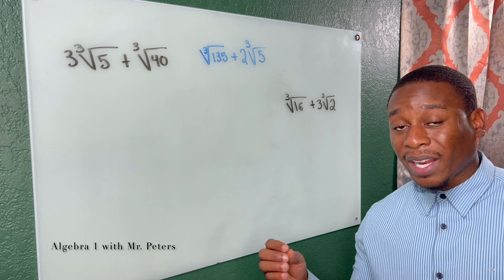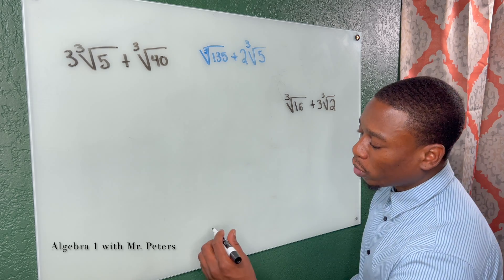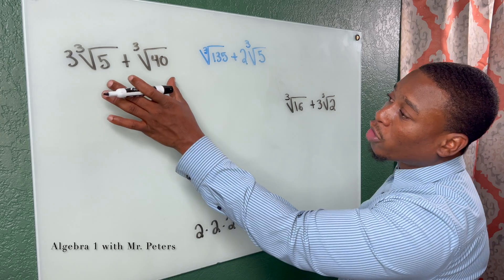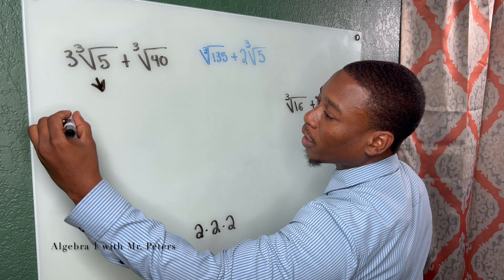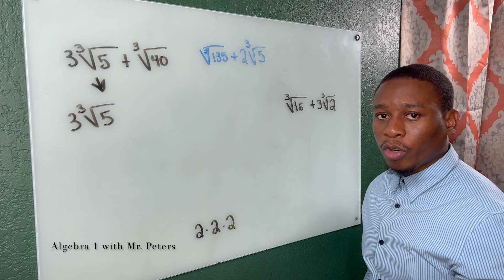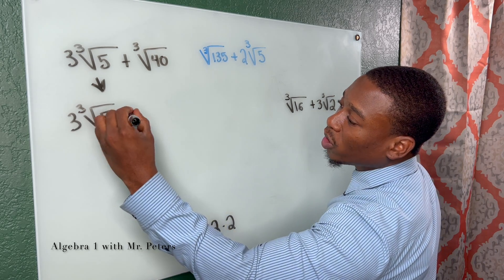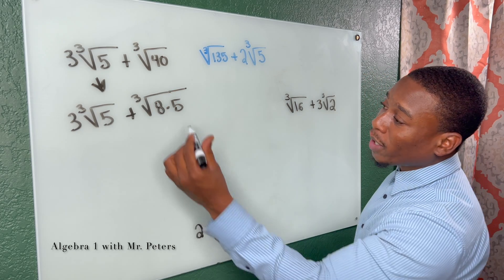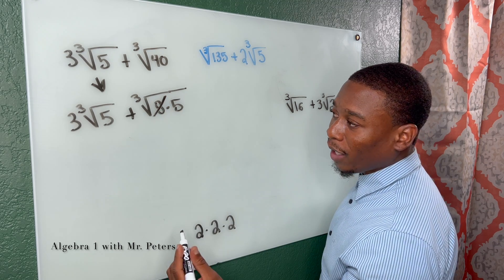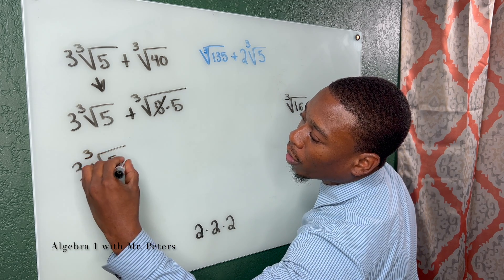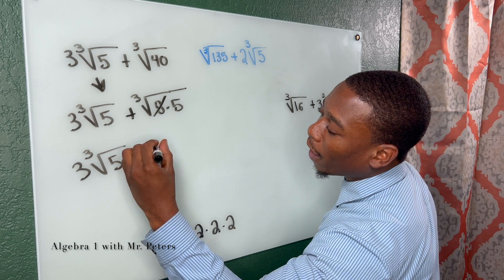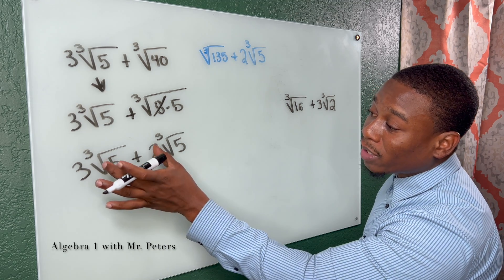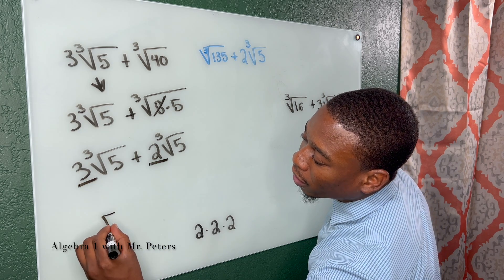In the last section we're talking about cube roots and how to simplify them — remember, cube roots are about triplets, like 2×2×2 or 3×3×3. For the first problem: the cube root of 5 has no perfect cube, so 3 times ∛5 stays the same. For ∛40, we can write it as ∛(8×5). The perfect cube here is 8, and the cube root of 8 is 2, giving 2∛5. Adding 3∛5 + 2∛5 gives a final answer of 5∛5.